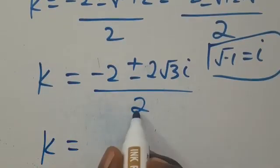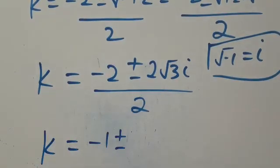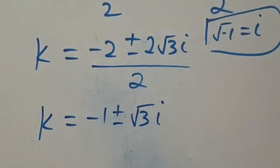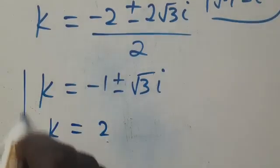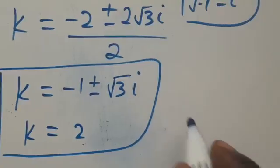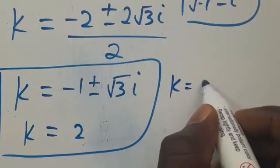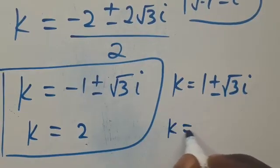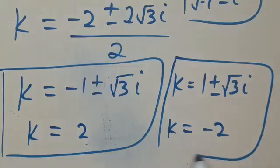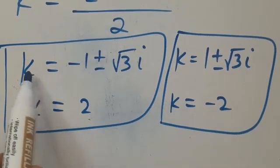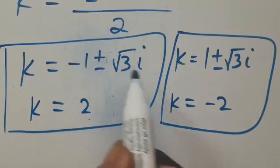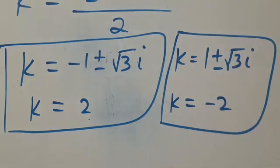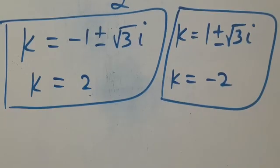So we have k equals minus 1 plus or minus root 3 i, and k equals 1 plus or minus root 3 i, which are complex solutions. While k equals 2 and k equals minus 2 are the real solutions. You can check this: for k equals 2, we have 2 to the power of 6 equals 2 to the power of 6. And for k equals minus 2, we have minus 2, all in brackets, to the power of 6, which equals 2 to the power of 6, since the power is even and the result is positive.